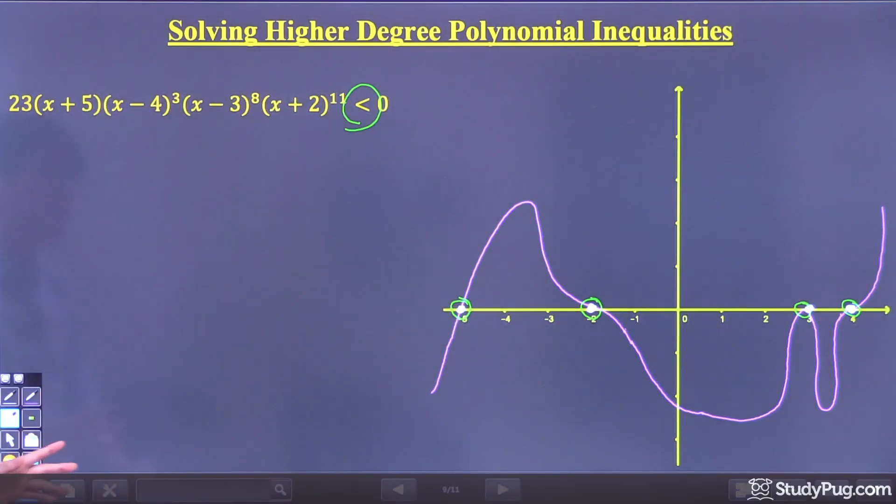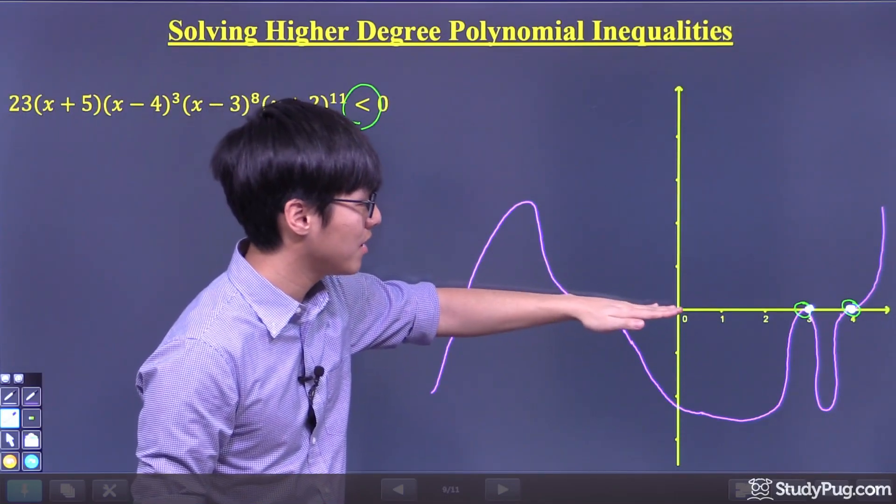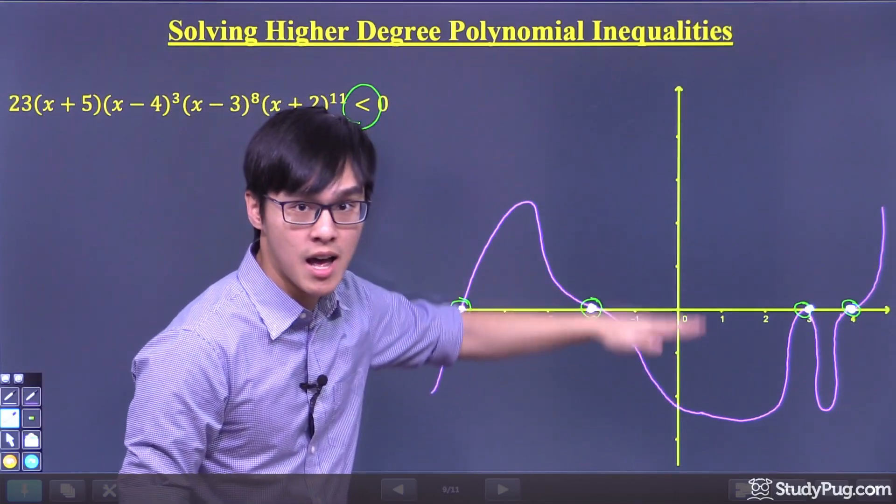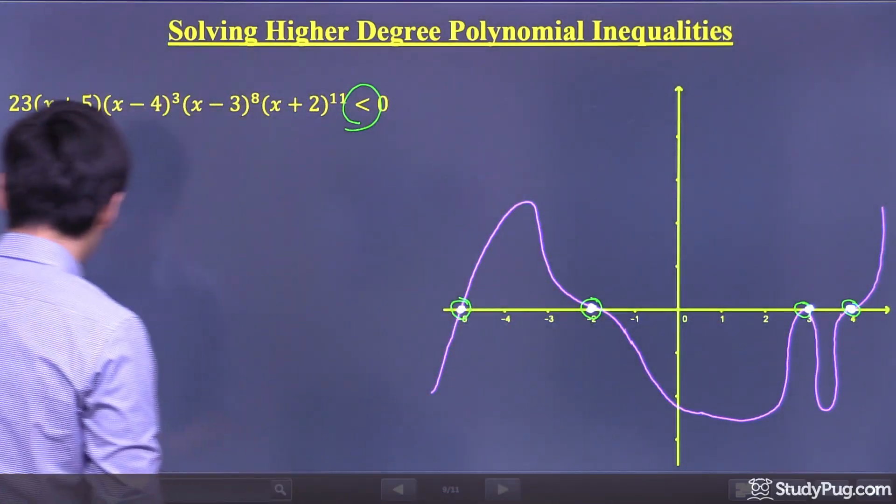Now we can move on. Which part of the graph is less than zero? Less than zero means everything that's under our x-axis. So where are the points?